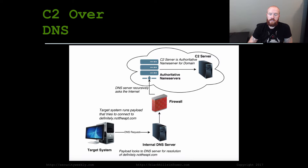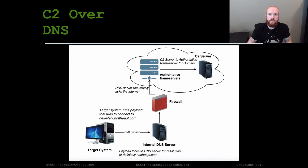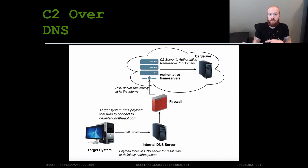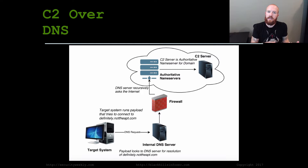C2 over DNS is probably my favorite transport mechanism as it tends to be extremely sneaky. To your firewall, the C2 connection looks like it's coming from your DNS server. The payload on the client recursively asks the internet for a DNS server that you as the attacker control, and the actual C2 channel is carried in text records attached to DNS packets.